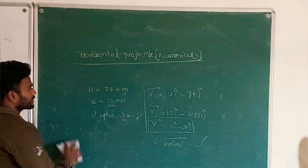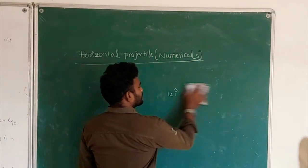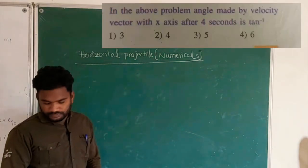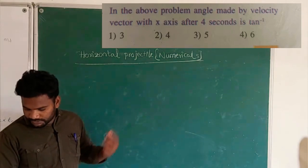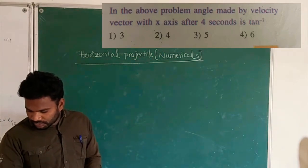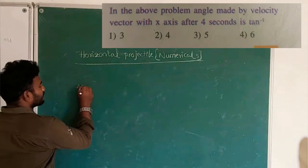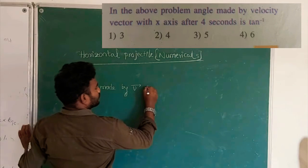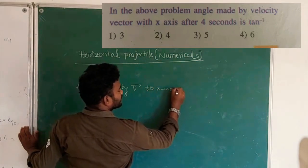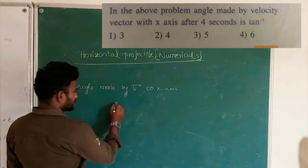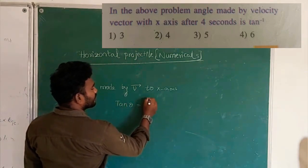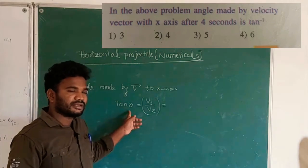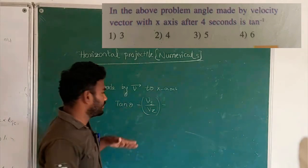In the above problem, the second question asks: what is the angle made by the velocity vector with the x-axis? The formula is tan θ = Vy / Vx, where θ is the angle made with respect to the horizontal. The vertical component of velocity Vy at time t is Gt, and the horizontal component is U.